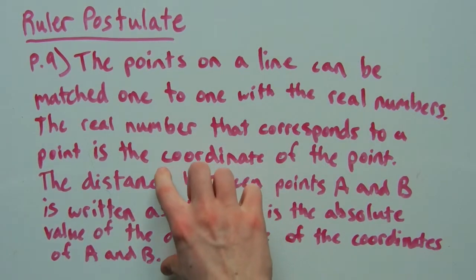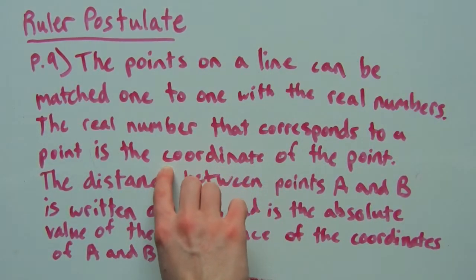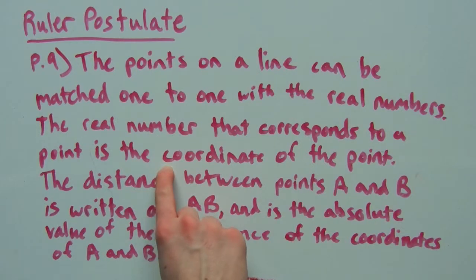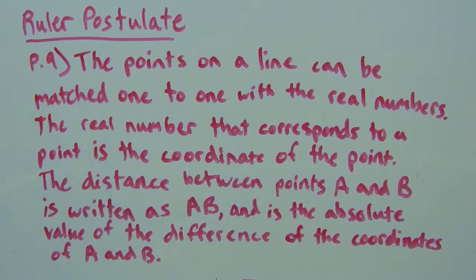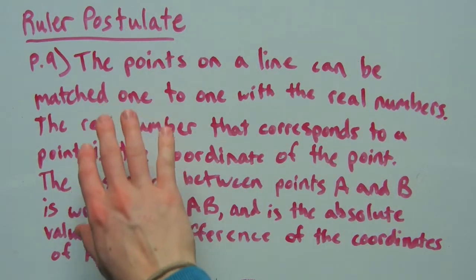And we will go over the second half of distance in a later video when we go over distance and midpoints. But for now, just focus on that the points on a line can be matched one to one with the real numbers. And this is the ruler postulate.